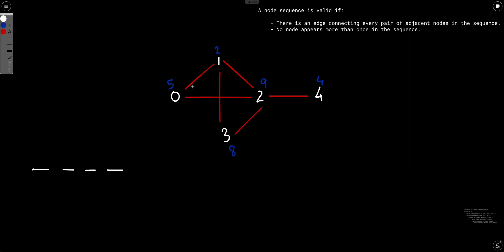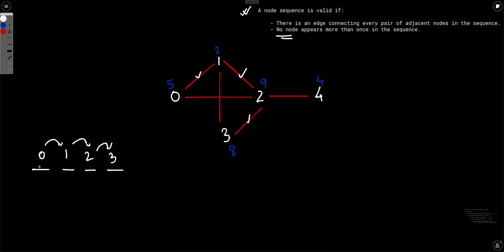For example, node 1's score is 2, node 0's score is 5, and so on. Now let's say we take a sequence of four nodes where no node appears twice — for example, 0, 1, 2, 3. This is a valid sequence because adjacent elements are connected: 0 is connected to 1, 1 is connected to 2, and 2 is connected to 3.